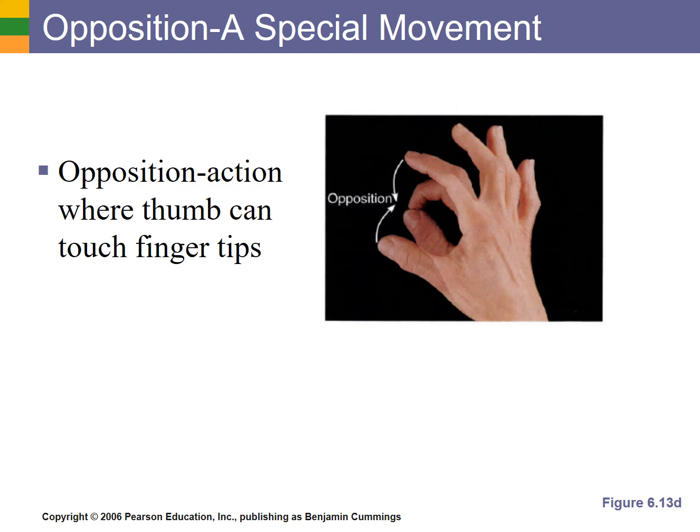And if you didn't have a thumb at all, you can still pick things up. What having an opposable thumb allows us to do is handle and manipulate tools. Think about how would you use scissors, or a hammer, or a screwdriver, or chopsticks without a thumb that you could resist or oppose the actions of your fingers.